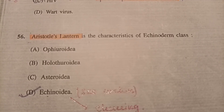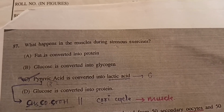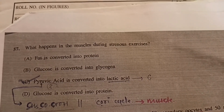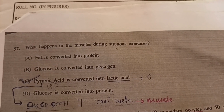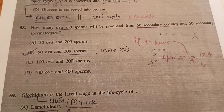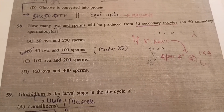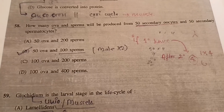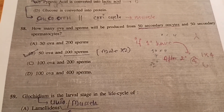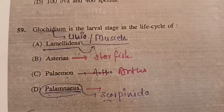Question 57: What happens in the muscle during strenuous exercise? Answer will be C — pyruvic acid is converted into lactic acid. Question 58: How many ova and sperm will be produced from 50 secondary oocytes and 50 secondary spermatocytes? Answer will be B — 50 ova and 100 sperms.